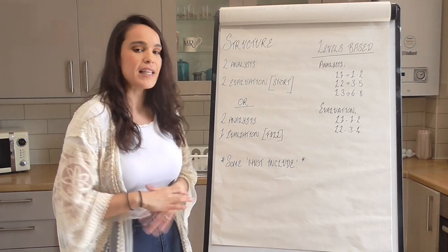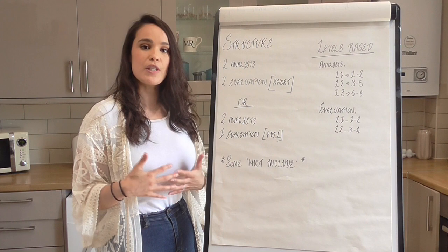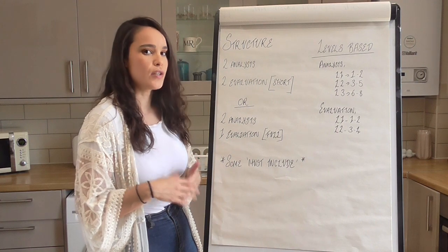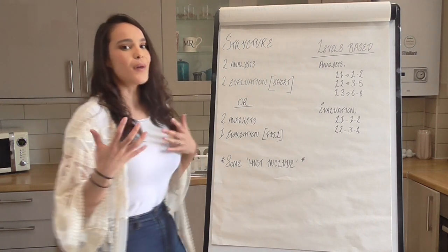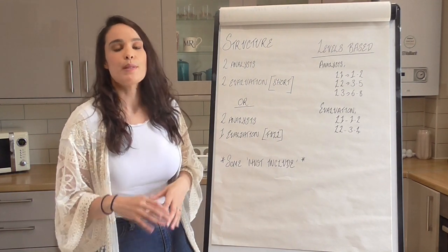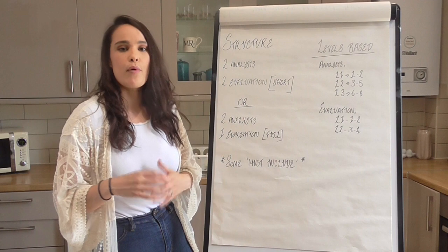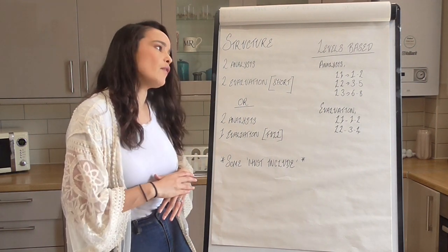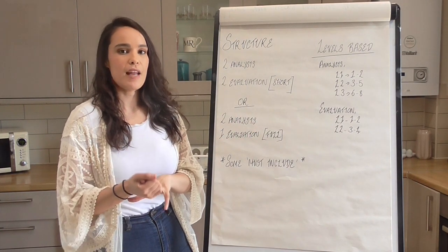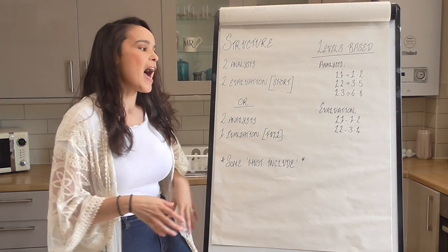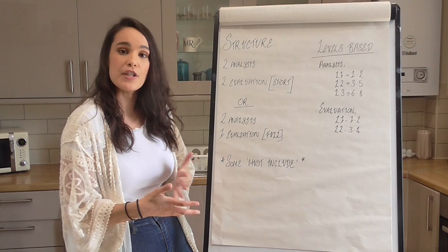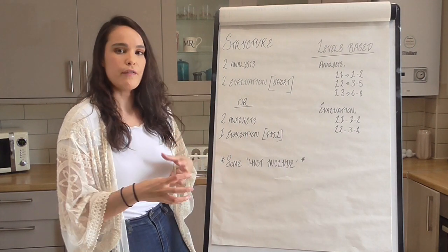It's up to you which one you do - it very much depends on the type of question rather than the structure you always go for. Our 12-mark question - true for Paper 1, Paper 2, and Paper 3 - uses levels-based answers. They are not points-based like the five and eight markers. For analysis there are three separate levels - level one, two, and three - and for evaluation just level one and level two. That changes for the 15-mark where you get a third level of evaluation.